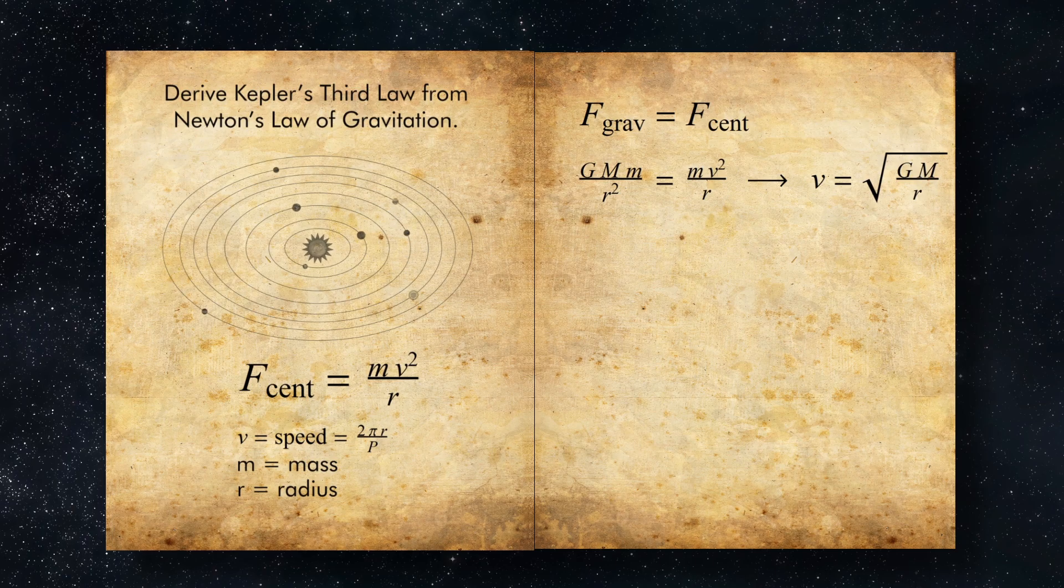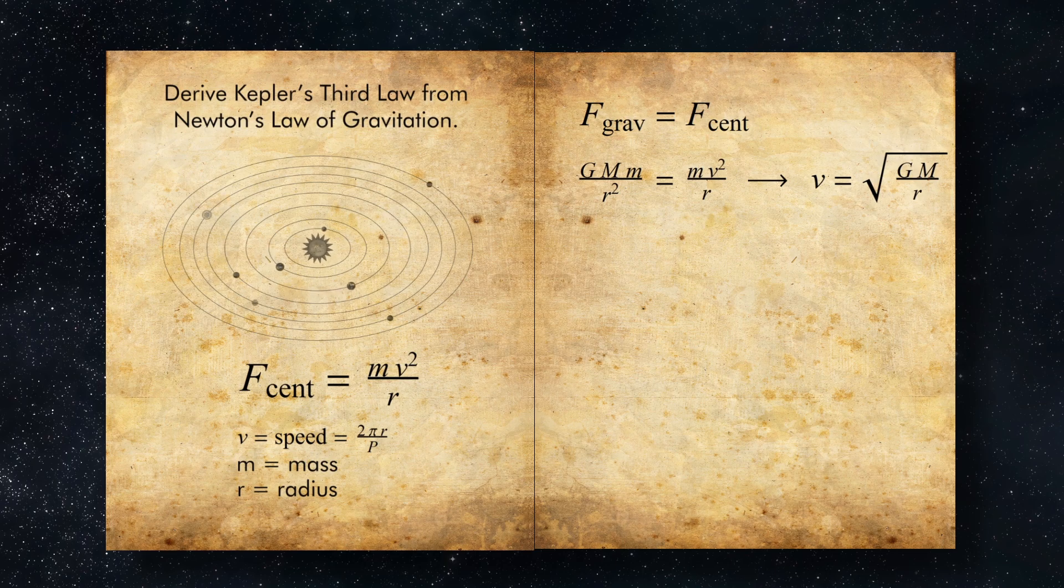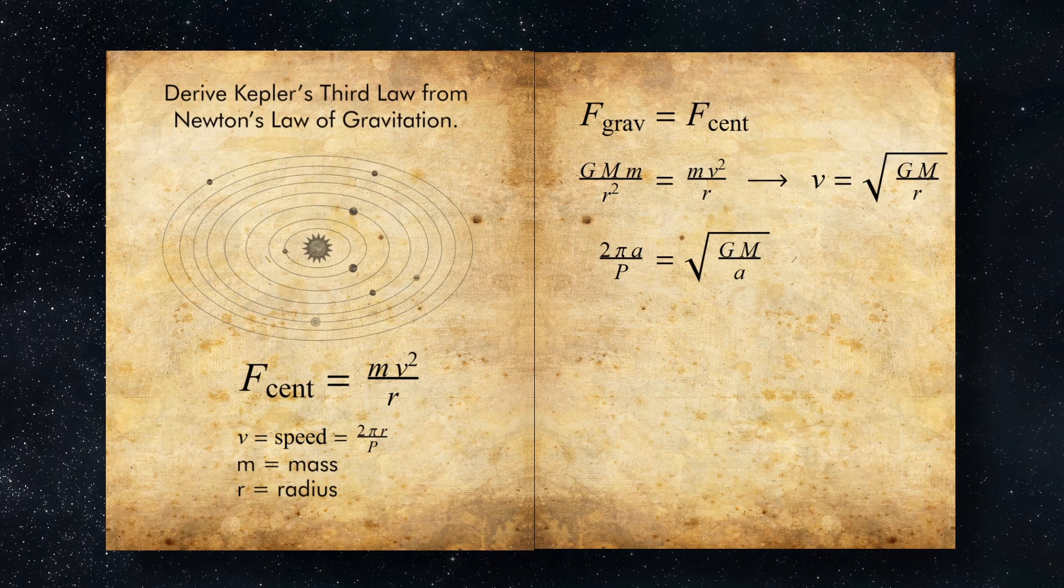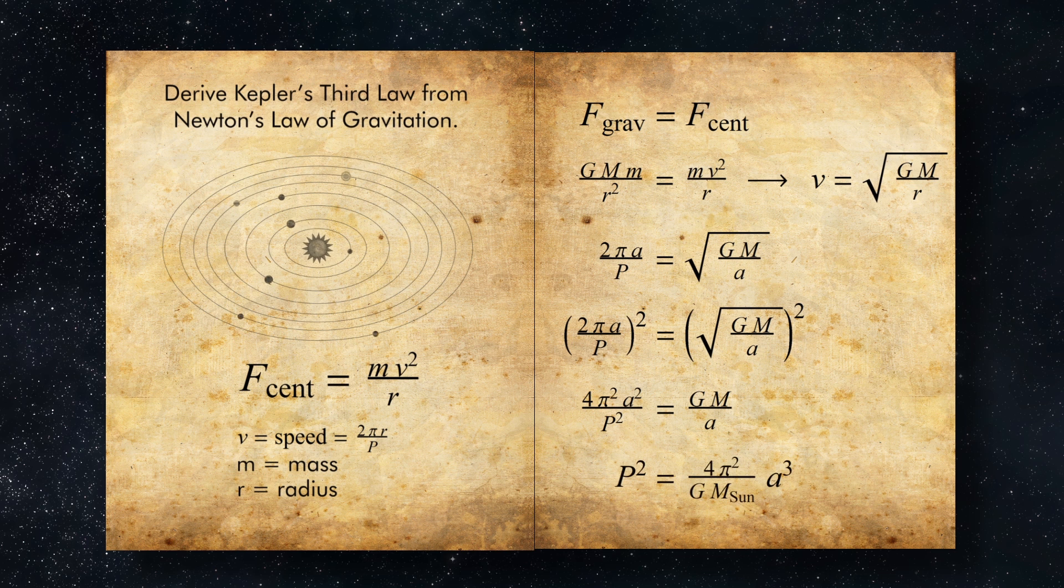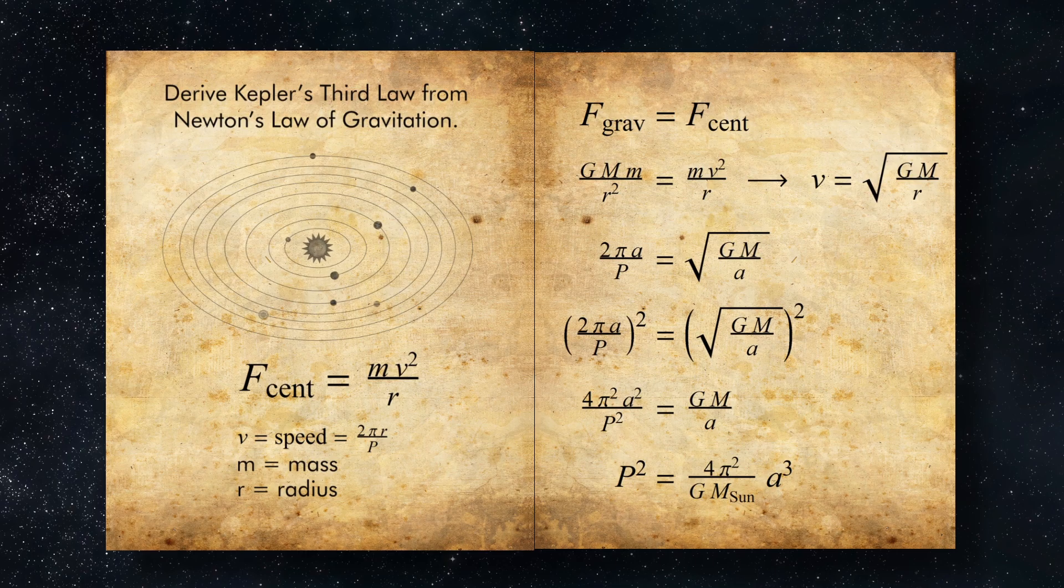And if we substitute that into our force equation from before, and use the semi-major axis a as our distance from the Sun, now we're back to elliptical orbits, we have 2πa over p equals the square root of G times m over a. After some rearranging, we've gotten back to Kepler's third law. That is, p² equals 4π² over G times m_Sun, all multiplied by a cubed.